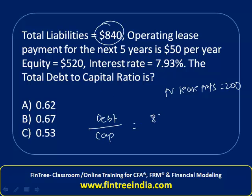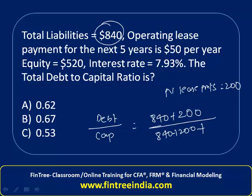Once we have this, to calculate the debt-to-total-capital ratio, the debt amount given is 840, to which we also add the present value of lease payments of 200. In the denominator for total capital, we have 840 plus 200, plus the amount of equity capital which is 520.